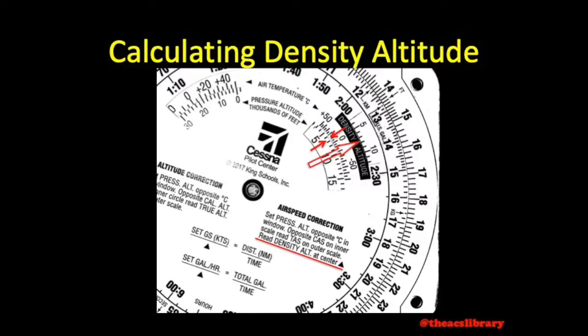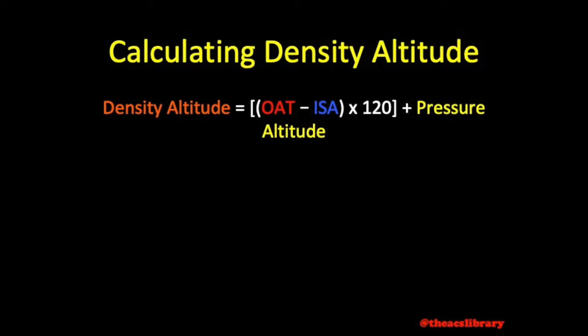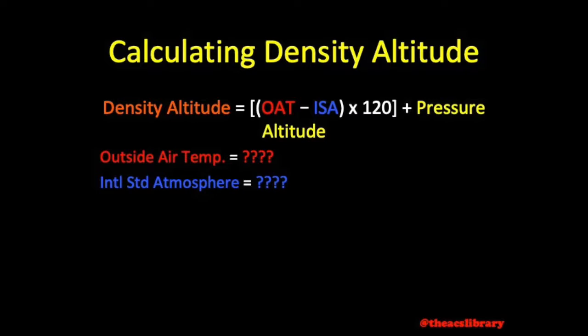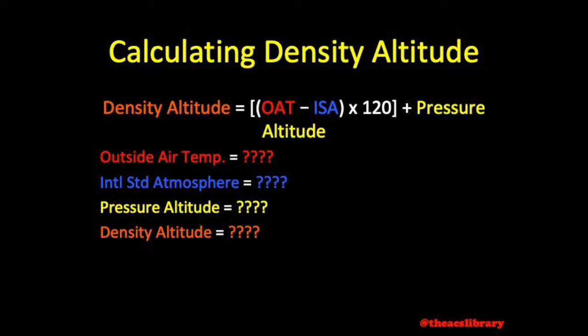To do this by hand, we would use the formula shown. We will take the current outside air temperature and subtract the expected temperature based on standard atmosphere, or international standard atmosphere, from that value. Next, we multiply the sum by 120, add all of that to our calculated pressure altitude, and we are left with density altitude.